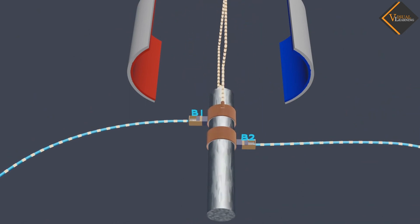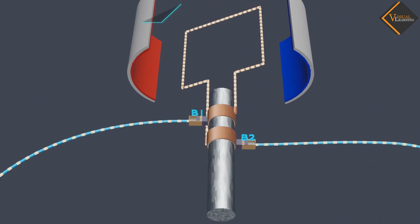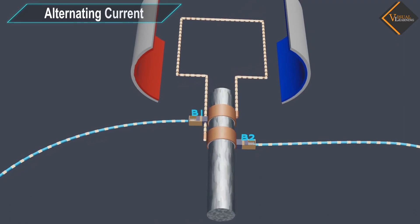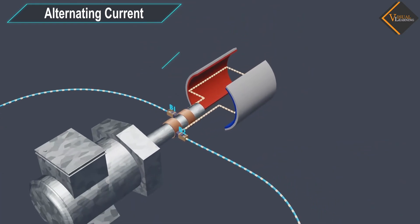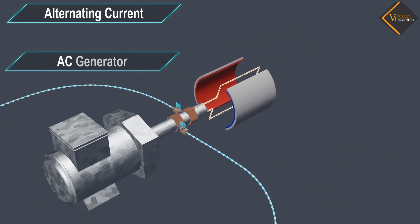Such a current, which changes direction after equal intervals of time, is called an alternating current. And the device is called an AC generator.